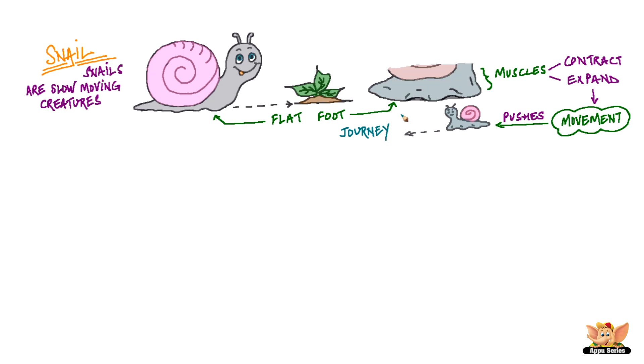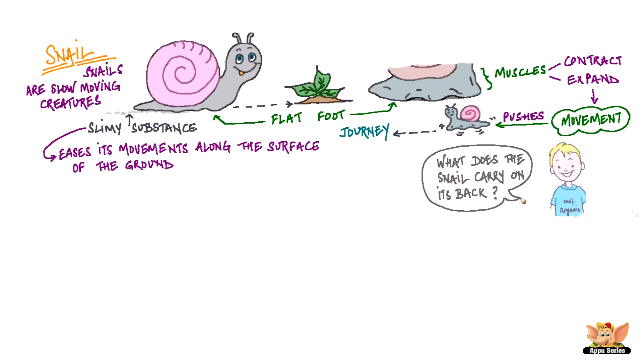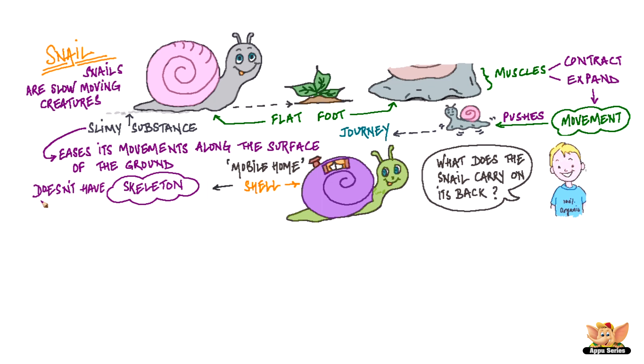Like the earthworm, the snail also produces a slimy substance as it moves. This slimy substance eases its movement along the surface of the ground. Have you seen what a snail carries on its back? That's the snail's mobile home called the shell. The shell is actually a skeleton even though it doesn't have any bones. This skeleton forms a protective covering for the delicate body of the snail.